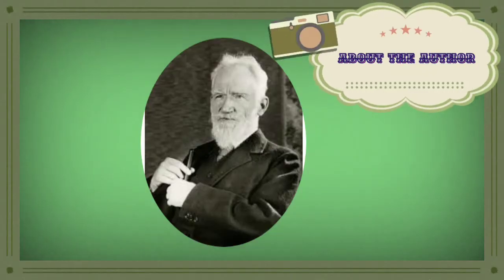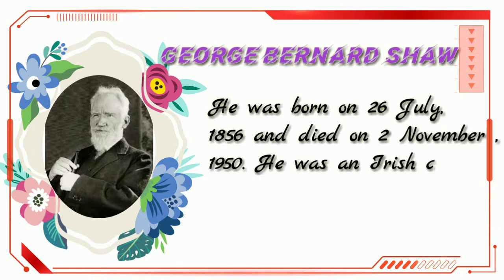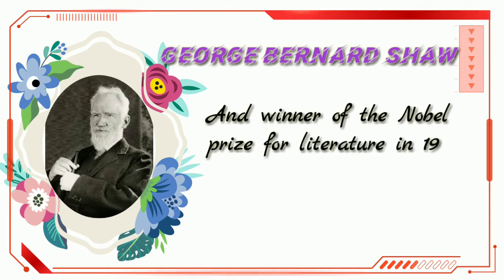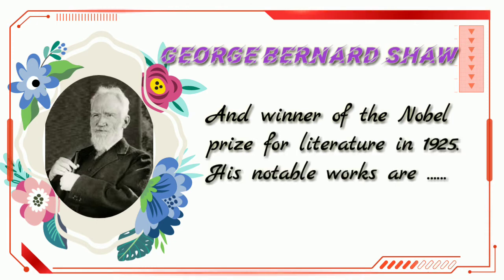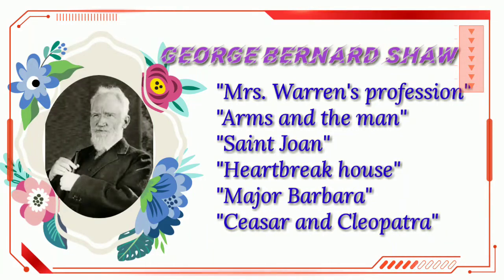George Bernard Shaw was born on July 26, 1856 and died on November 2, 1950. He was an Irish comic dramatist as well as a literary critic and winner of the Nobel Prize for Literature in 1925. His notable works are Mrs. Warren's Profession, Arms and the Man, St. Joan, Heartbreak House, Major Barbara, and Caesar and Cleopatra.